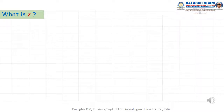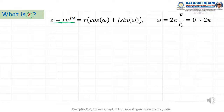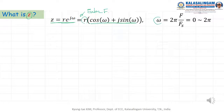Z means R times exponential J omega. Using Euler's formula, we can rewrite this as R cosine omega plus J sine omega. Here omega equals pi F divided by FS, which is the normalized frequency.